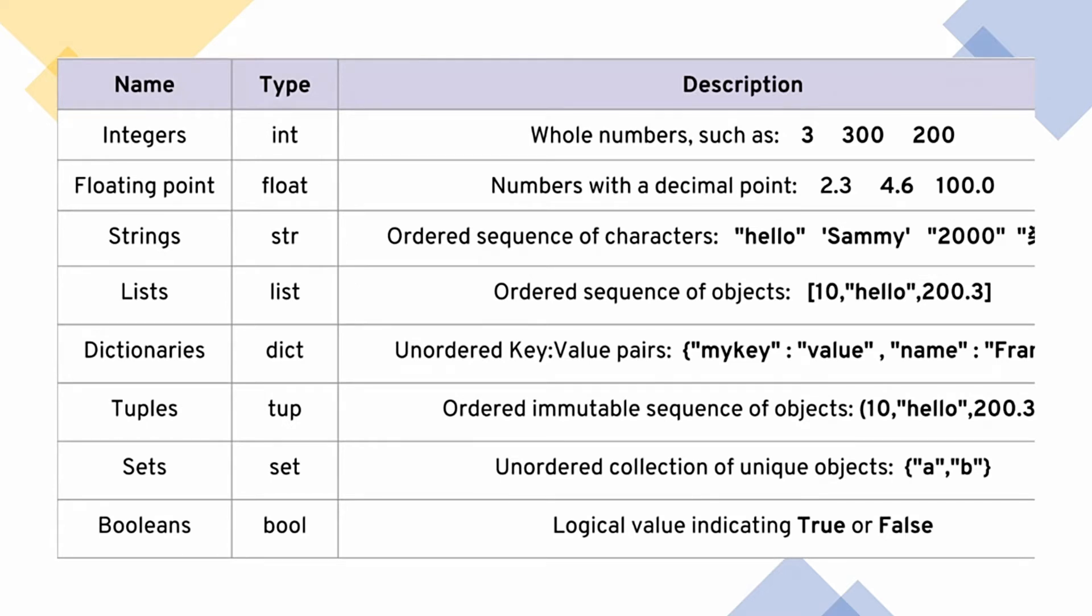So let's see what are these eight important data types that we are going to study. These are integers, floating point numbers, strings, lists, dictionaries, tuples, sets, and booleans.